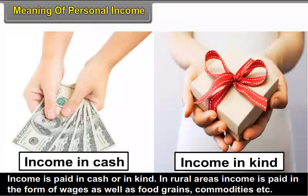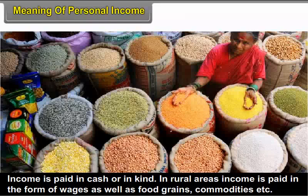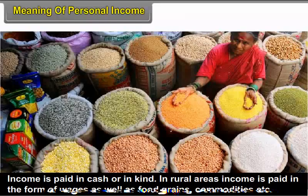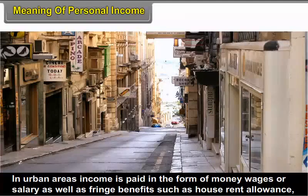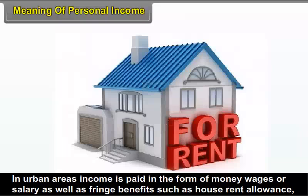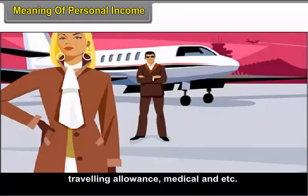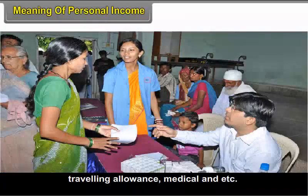Income is paid in cash or in kind. In rural areas, income is paid in the form of wages as well as food grains, commodities, etc. In urban areas, income is paid in the form of money wages or salary as well as fringe benefits such as house rent allowance, travelling allowance, medical aid, etc.